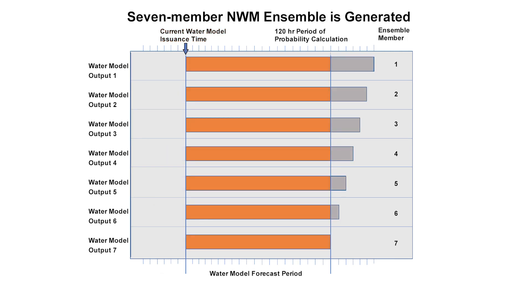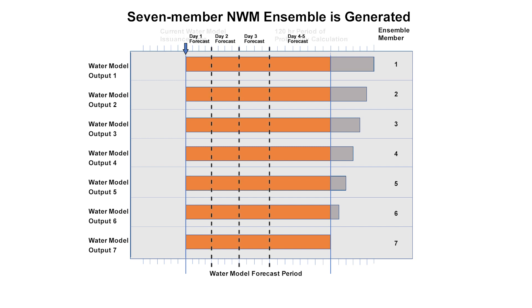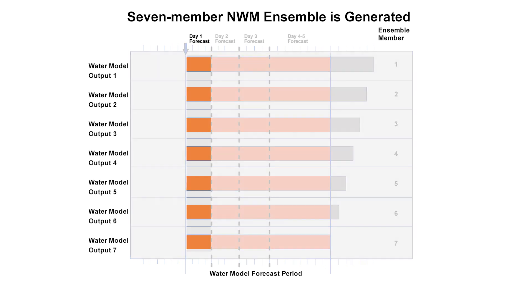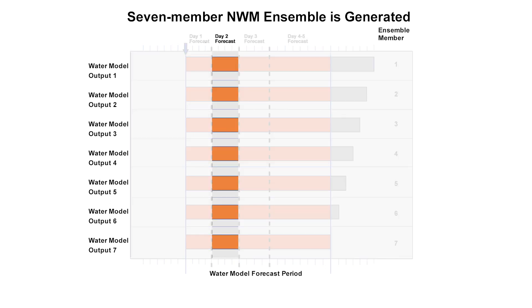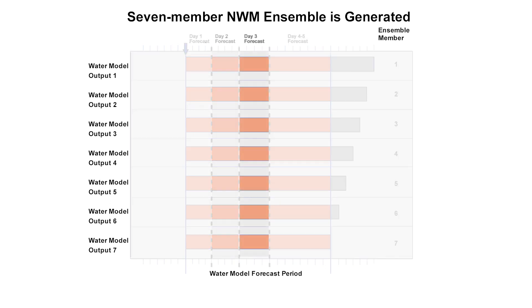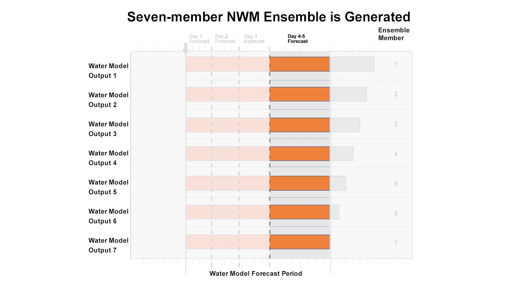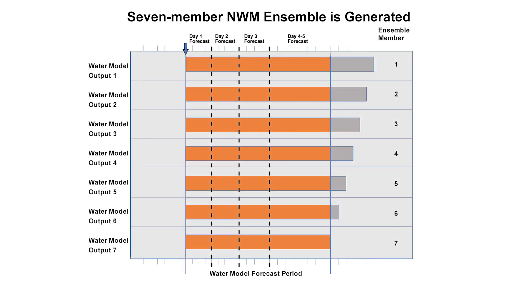A seven-member National Water Model Ensemble output is generated using the seven time-lagged GFS inputs. The ensemble output is then used to calculate the probability of high water conditions for day one, day two, day three, day four and five, and days one through five.